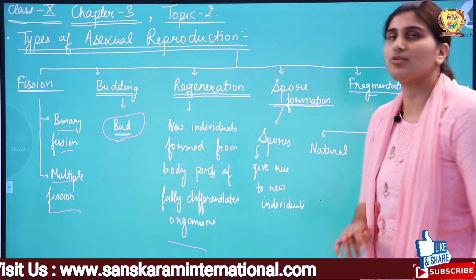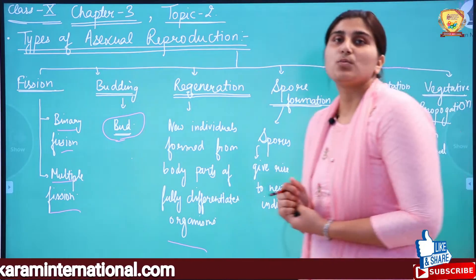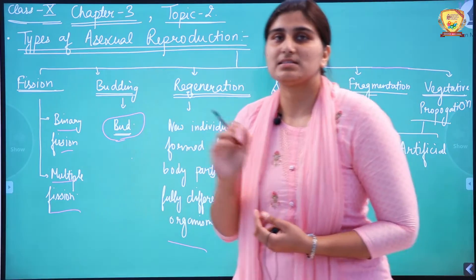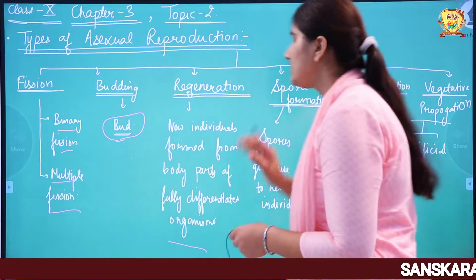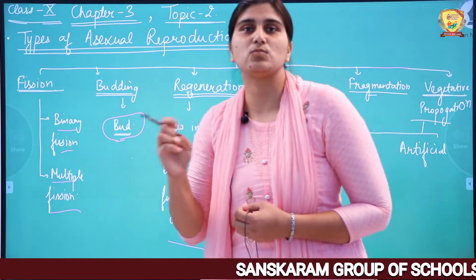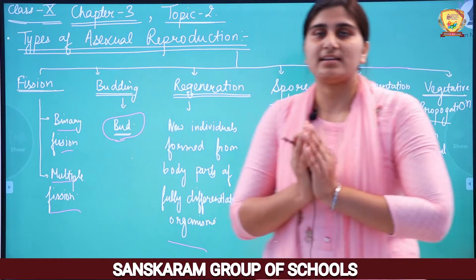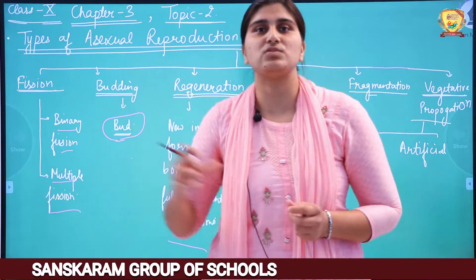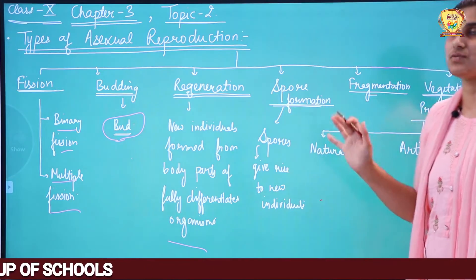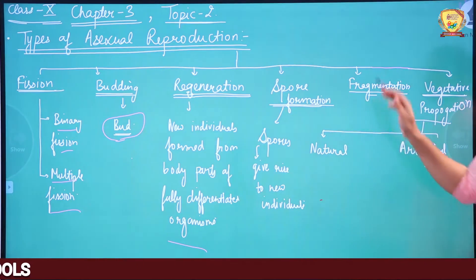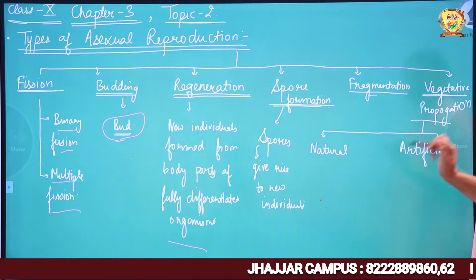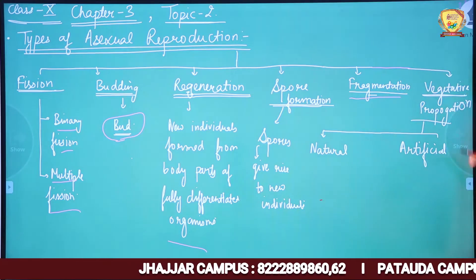The next type is Spore Formation, also called Sporulation. In this, some tiny specialized cells are formed, which we call spores. Inside the parent body, spore formation begins slowly. Finally the parent body ruptures, and the spores give rise to new individuals. This is summarized in a flow chart form for you.